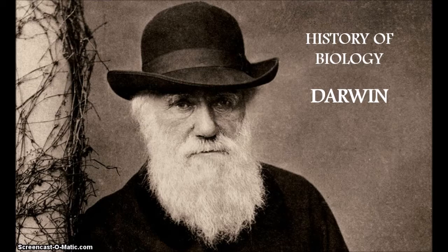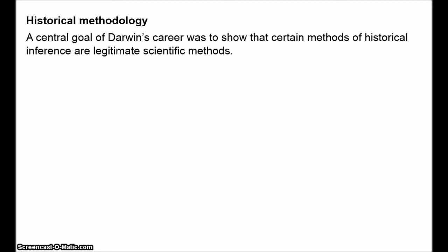Darwin thought that natural selection was the primary mechanism of all evolution. The central theme of Darwin's career was the attempt to show that certain methods of historical inference are legitimate scientific methods. He attempted to validate natural history as a science and show that it had a basis just as secure as physics or chemistry.